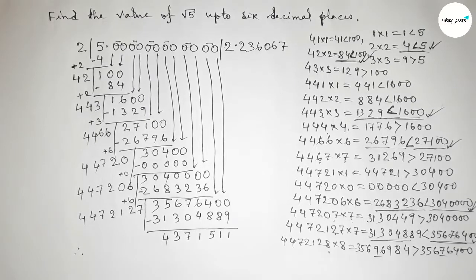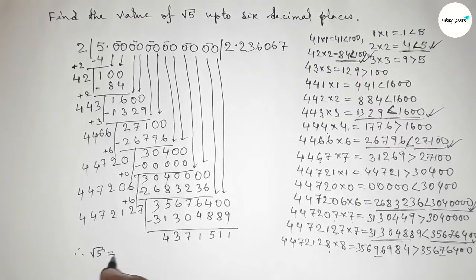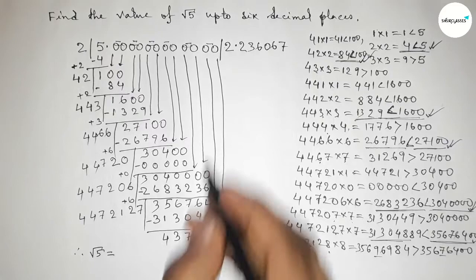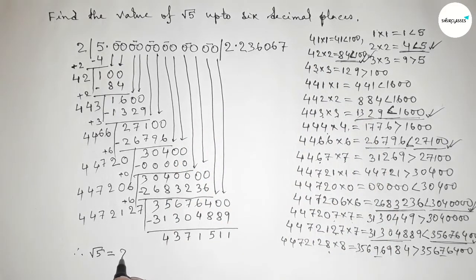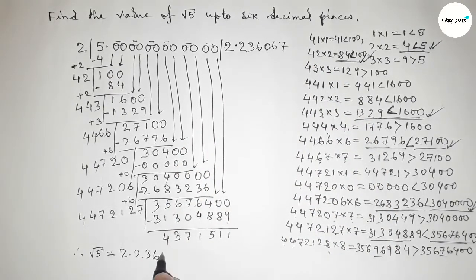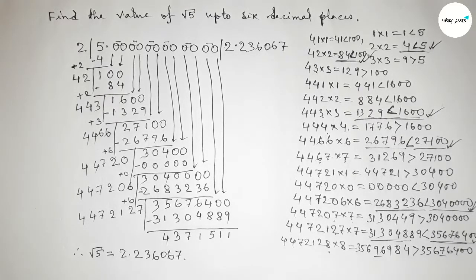Therefore, the value of root 5 up to 6 decimal places is 2.236067. That's all — thanks for watching! If this video was helpful to you, please share it with your friends.